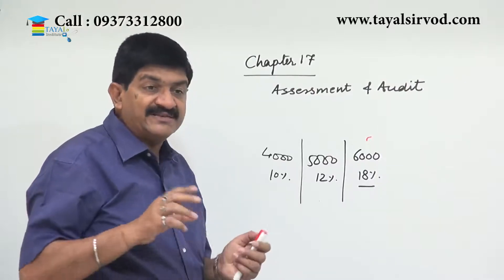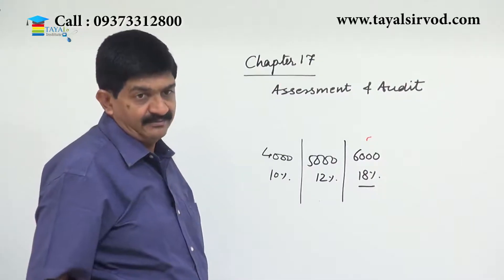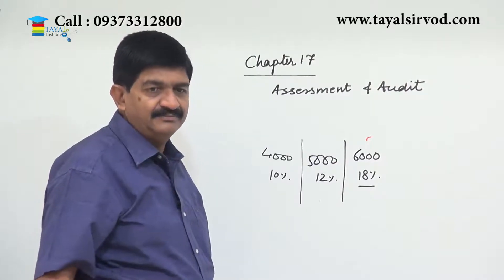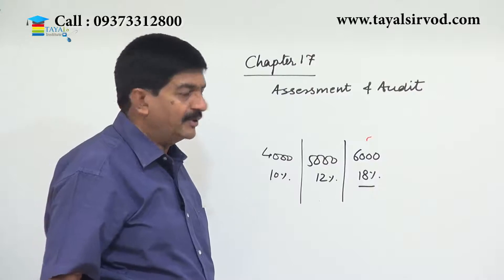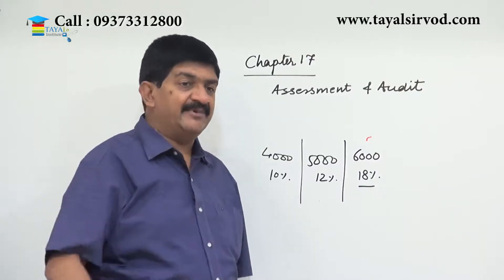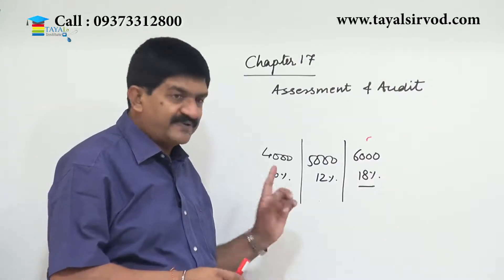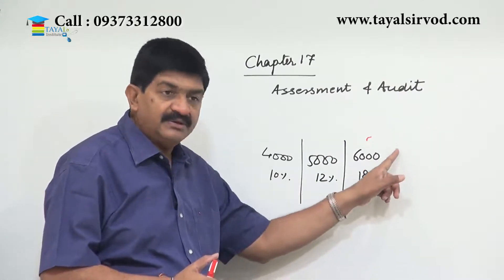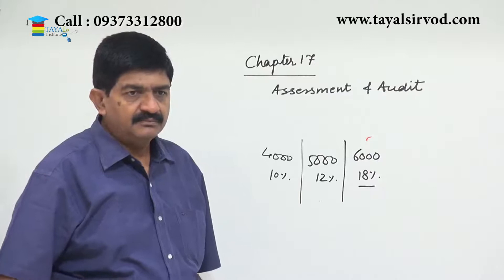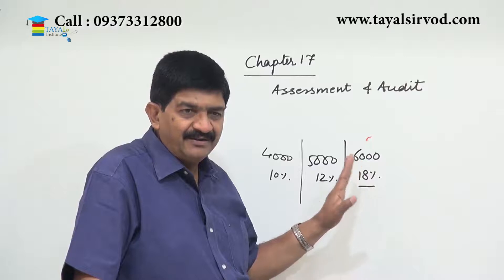Later on, when things are examined and information is provided by the supplier to the officer, the officer determines the final liability. Three outcomes are possible. First: whatever was paid provisionally turns out to be the final liability itself — the officer asked the assessee to pay tax at a certain rate and the final liability also comes to the same amount. In that case, there is no interest, no penalty, and no further consequences.